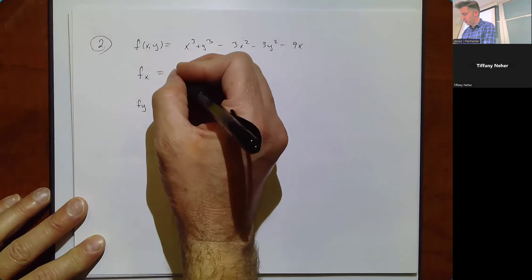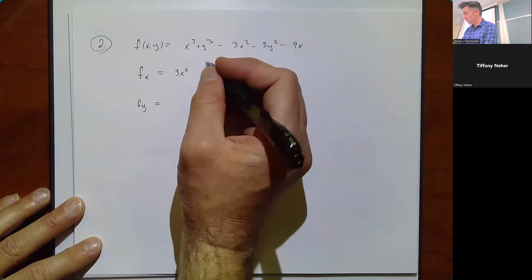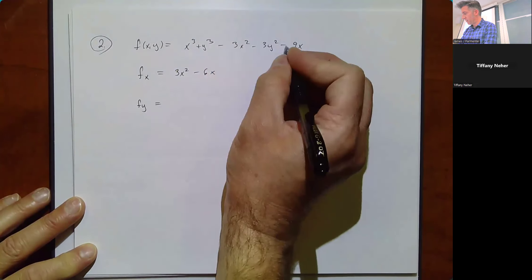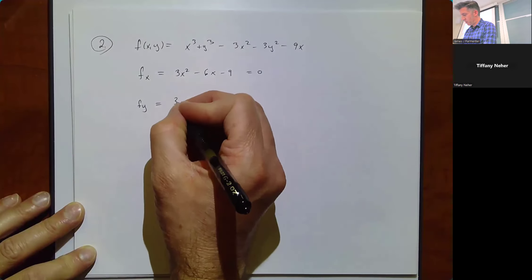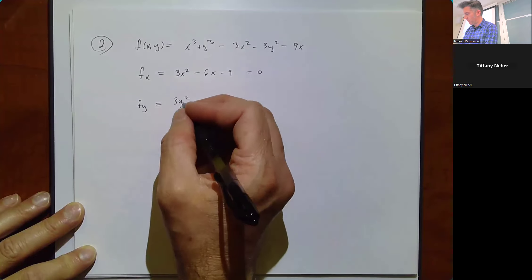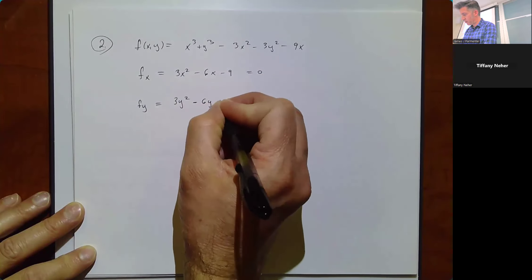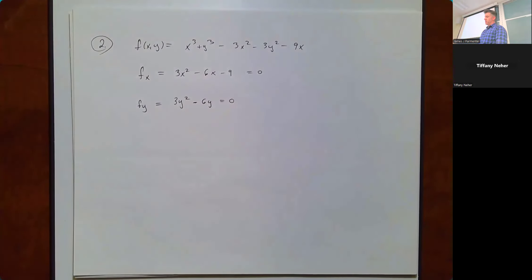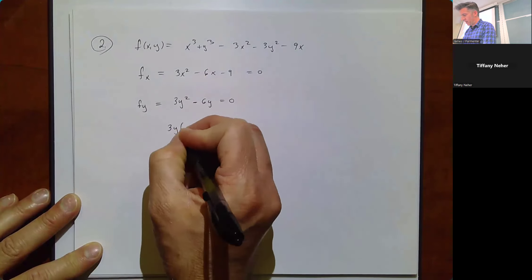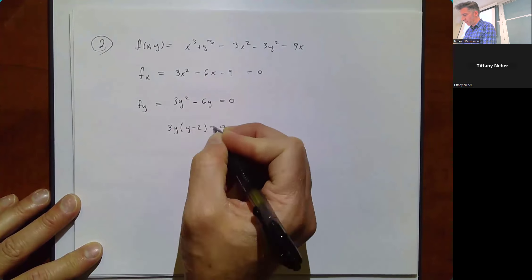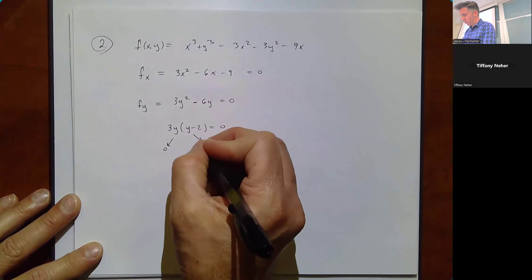For fx: the derivative of x³ is 3x², the derivative of -3x² is -6x, and the derivative of -9x is -9, giving fx = 3x² - 6x - 9, set equal to zero. For fy: it's 3y² - 6y, set equal to zero. Each equation has only one variable, so we solve them independently.